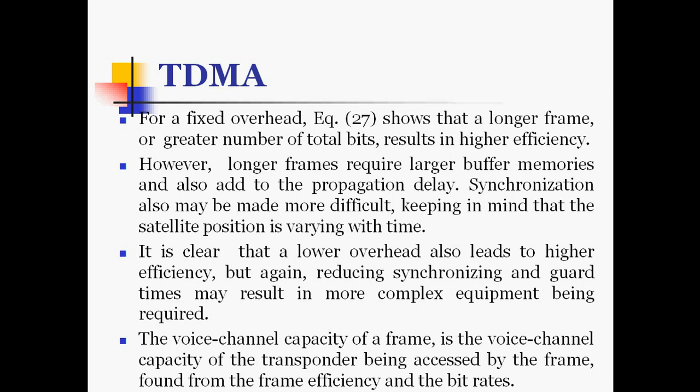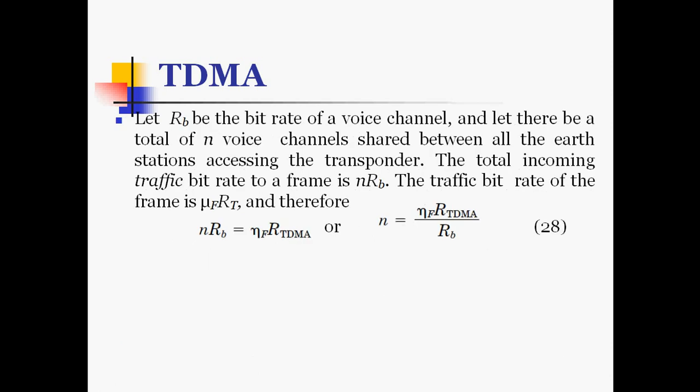The voice channel capacity of a frame is found from the frame efficiency and the bit rate. Let R_b be the bit rate of a voice channel and let N be the total number of voice channels shared between all earth stations accessing the transponder. The total incoming traffic bit rate to a frame is N·R_b. The traffic bit rate of the frame is η_F · R_TDMA, therefore: N·R_b = η_F · R_TDMA, or η_F = N·R_b / R_TDMA.